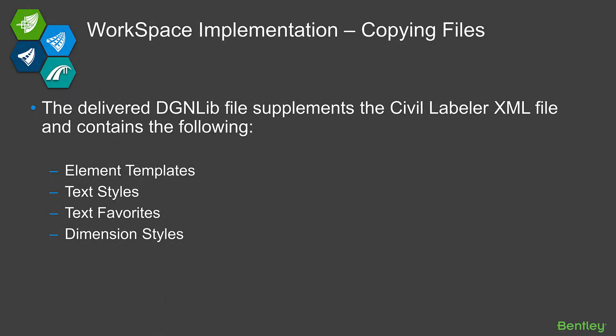The delivered DGN library file supplements the Civil Labeler XML file. The XML file essentially contains all of the settings and pointers for your label — it points to your text favorite, element template, text styles, et cetera. We also have this DGNLib that actually contains those resources. Dan created this DGN library along with the XML file that we deliver in our examples workspace, and he purposely made it simple for you to transfer to another workspace where the element templates, text styles, text favorites, and dimension styles are all in a single DGN library. That's the second file you would copy over to your workspace.